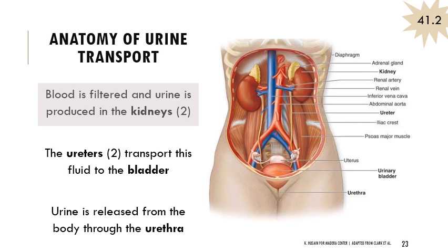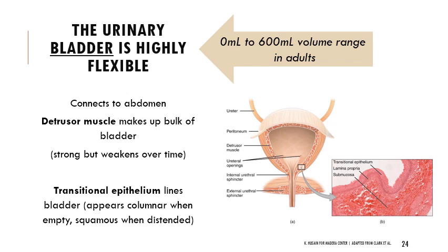The urinary bladder is very flexible, ranging from about zero to 600 mls in adults. It's mostly made of muscle but also has transitional epithelium, which appears very columnar when the bladder is empty. As the bladder fills with urine, it stretches and appears squamous — going from tall and narrow to short, flat, and spread out. The muscle that makes up the bladder is initially strong but weakens over time, which leads to incontinence in many older adults.